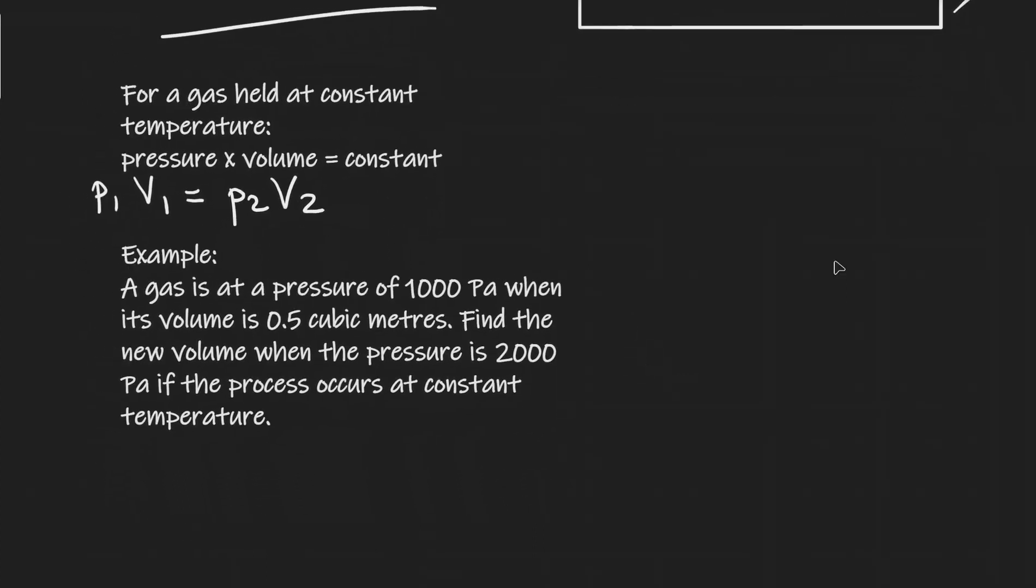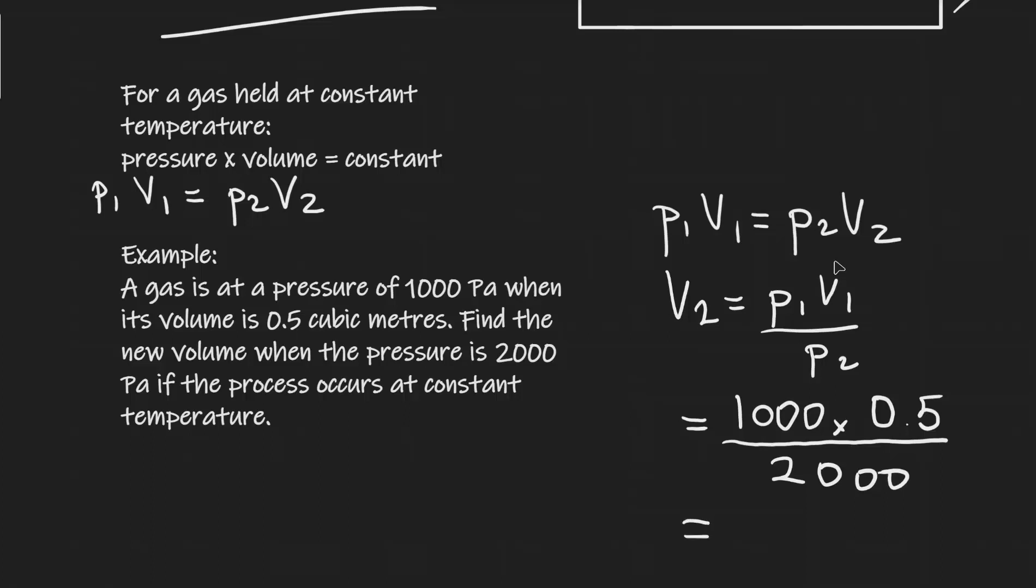Let me give you an example. We have a gas at a pressure of 1,000 pascals when its volume is 0.5 cubic meters. Find a new volume when the pressure rises to 2,000 pascals if the process occurs at a constant temperature. I'm just going to use my formula that P1V1 is equal to P2 multiplied by V2. We're looking for the final volume, so V2 will be equal to P1V1 divided by P2. The initial pressure is 1,000 multiplied by V1, which is 0.5, then we're dividing that by the final pressure, which is 2,000. Overall, this will give me a final volume of V2 equal to 0.25 cubic meters.